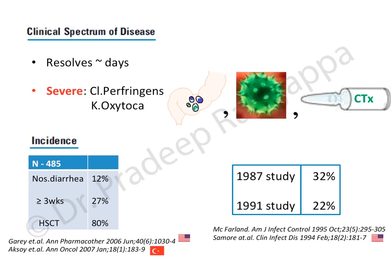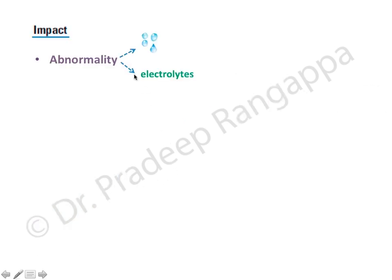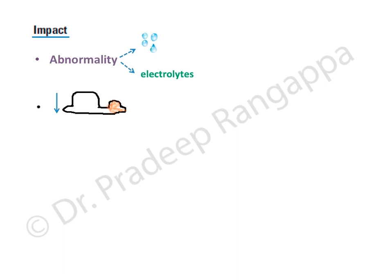Diarrhea in ICU has a bearing on hydration status and electrolytes. Chronic diarrhea impairs feed tolerance and leads to malnutrition. Interestingly, diarrhea is also associated with increased risk of other nosocomial infections like UTI and catheter-related bloodstream infections, possibly due to contamination or worsened host defense mechanisms.